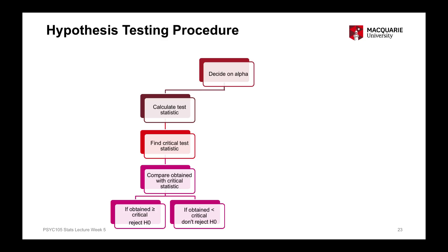On the other hand, if the obtained test statistic is smaller than the critical test statistic, we don't reject the null hypothesis — in that instance there isn't enough strength of evidence to conclude that we haven't made a type 1 error.